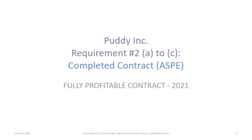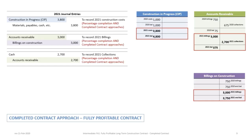Now we'll look at 2021. There's no need to show the original data slide again; we'll focus on the journal entries and balance sheet presentation. In the second year, again, the same three journal entries apply: $3.8 million in costs to construction in progress, billings of $3 million debiting accounts receivable and crediting billings on construction, and $2.7 million in collections. This leaves balances of $4.8 million in construction in progress, $375,000 in accounts receivable, and $3,750,000 in billings on construction.